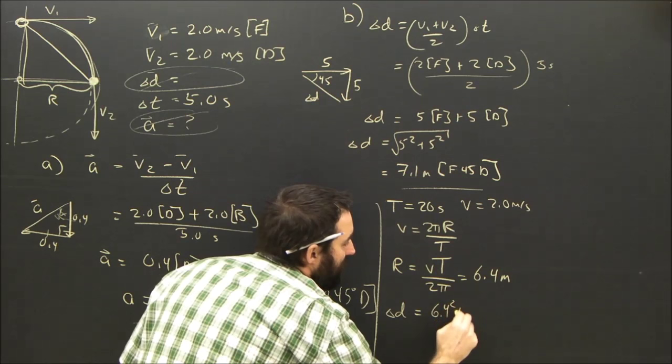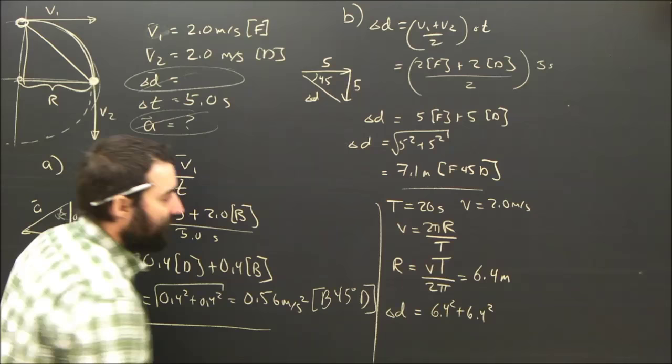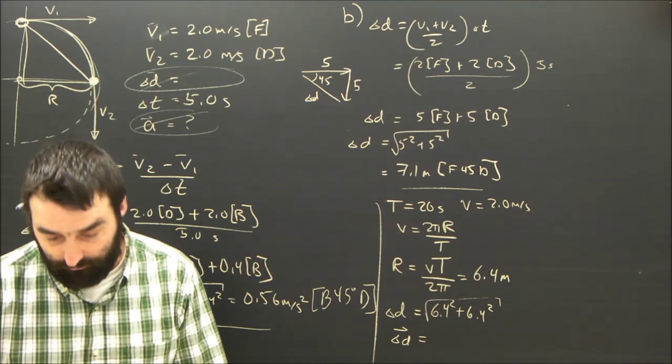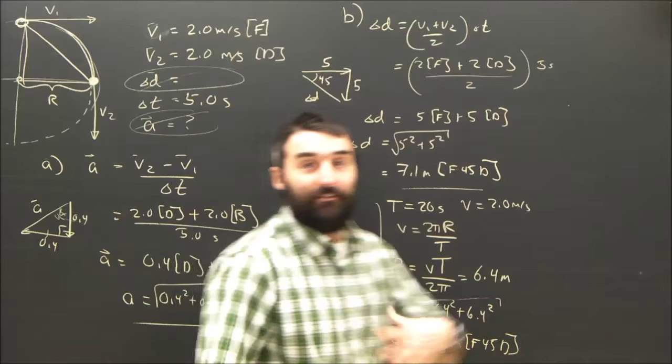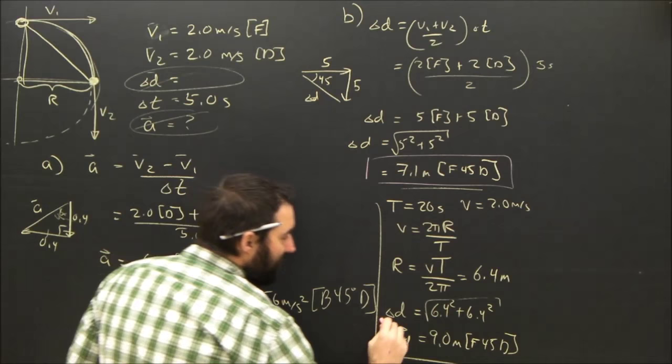So the displacement according to this idea would be 6.4 squared plus 6.4 squared, which is sure not what we had a second ago, which was 5 squared. Square root of it. The answer when we use this displacement will be 9.0 meters. Forward 45 degrees down. So when I assign this question to my students, the next day, amongst those who have accomplished it, I get some people who believe the answer is 7.1 meters and some who believe it is 9 meters. Same direction.